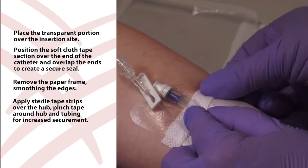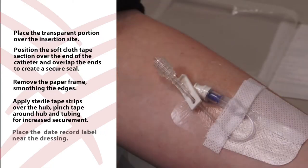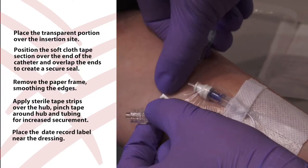Extra sterile tape strips can be used to secure back tubing, ensuring that you pinch the edge sterile tape strip around the tubing for increased securement. Place the date record label near the dressing for documentation.